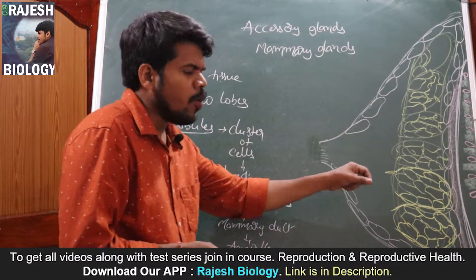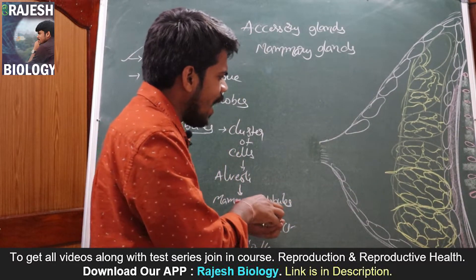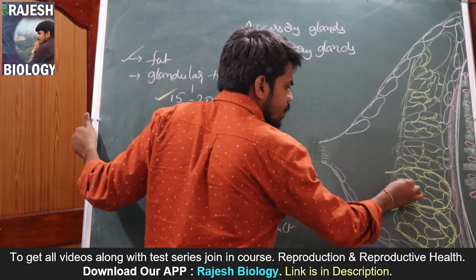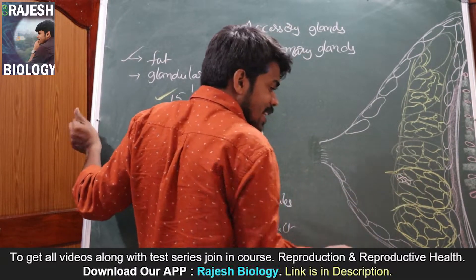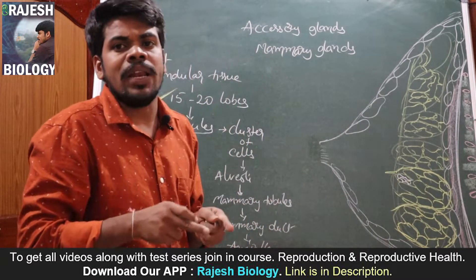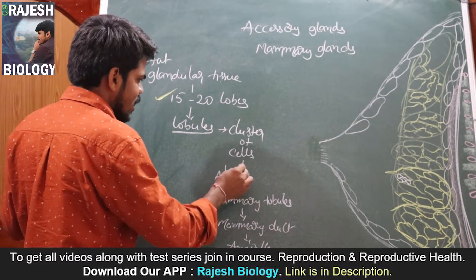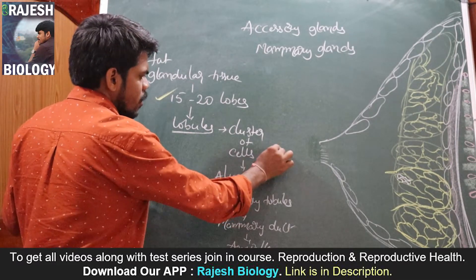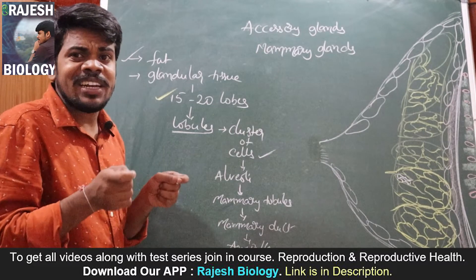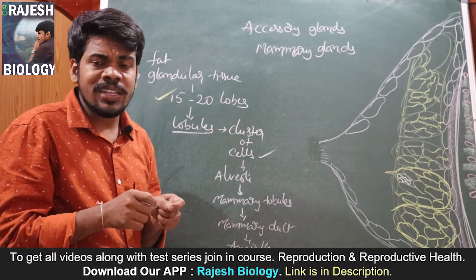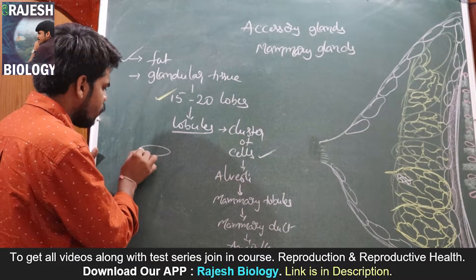Each and every lobule has so many cells called alveolar cells. They secrete the milk, and that milk is secreted by the alveolar cells.